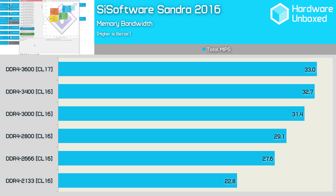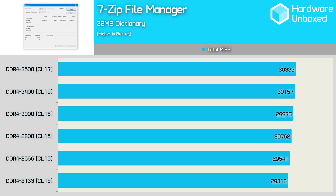The sweet spot does appear to be DDR4 3400 memory. It's interesting to see how the increased bandwidth impacts performance in the 7-zip application. Although the gains are consistent, we only see a 3% improvement when jumping all the way from DDR4 2133 to DDR4 3600. So not all applications will benefit greatly from increased memory bandwidth.